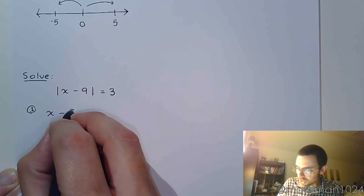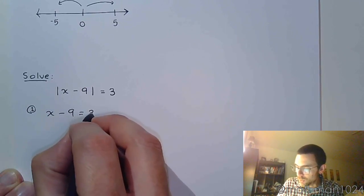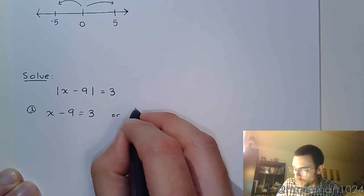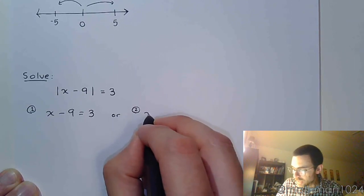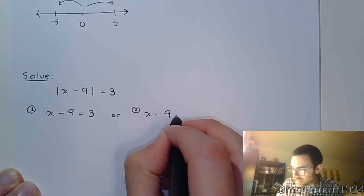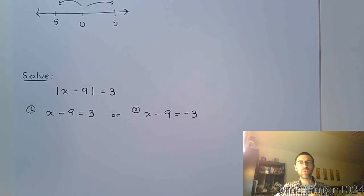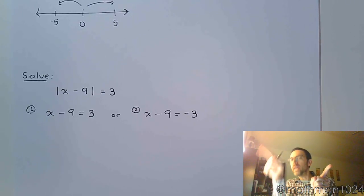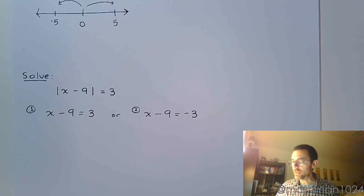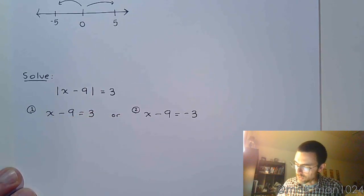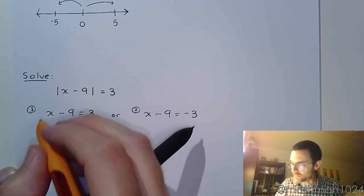So we know that the expression inside has to either equal three, or the other option is that the expression inside has to equal negative three. You want your distance to be three units away from zero, which means you will either land at positive three if you go over here or negative three if you go to the left side. And then you take each of these equations and solve them.